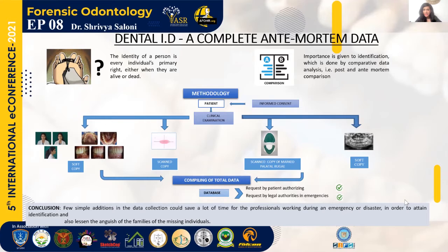We recorded intraoral and extraoral photographs. Extraoral photographs were taken with the patient standing against a background, both in frontal and lateral views. In the frontal position, photographs were taken in a relaxed position as well as a smiling position. Intraorally, photographs of the maxilla were taken using indirect vision, and the mandible and surrounding structures using direct vision. We also recorded both right and left occlusion. Soft copies were recorded and put into the database.